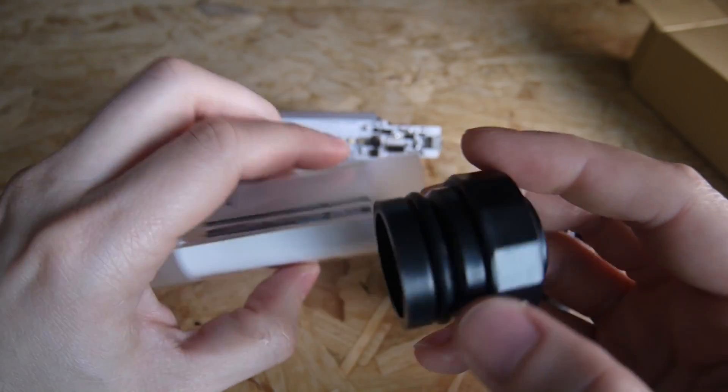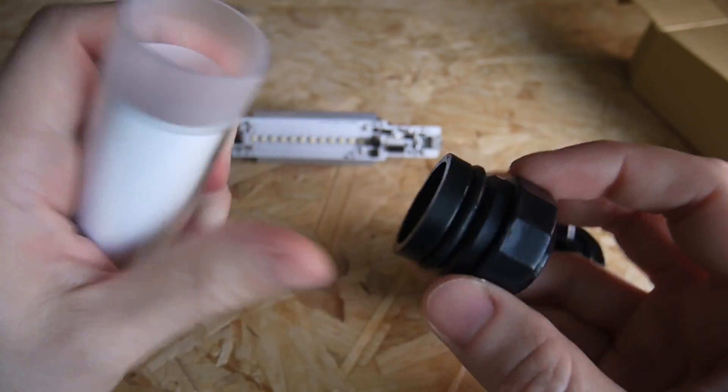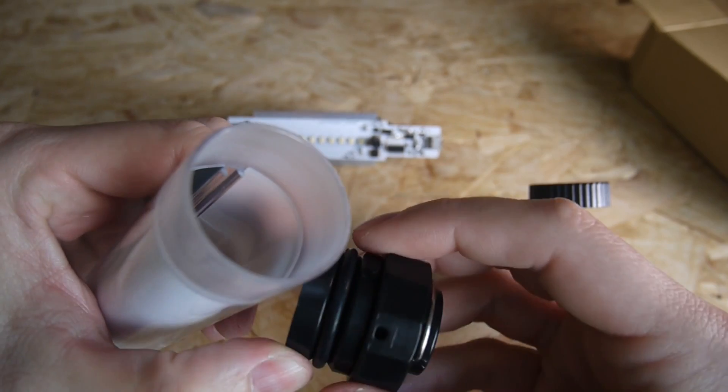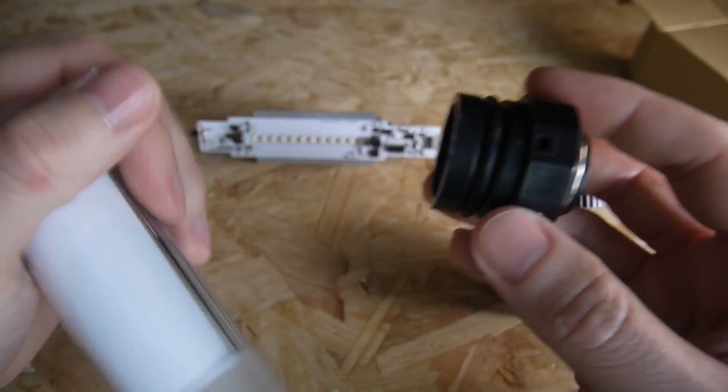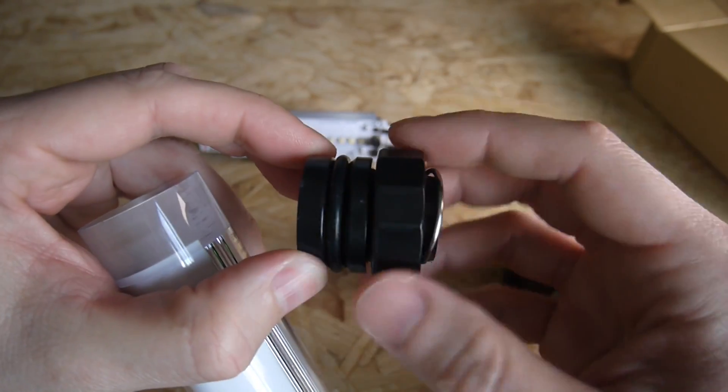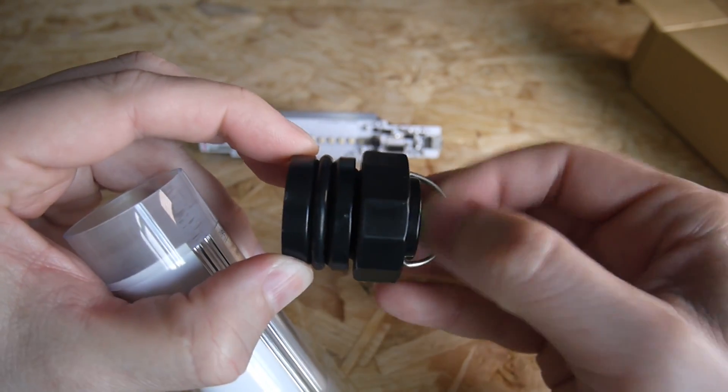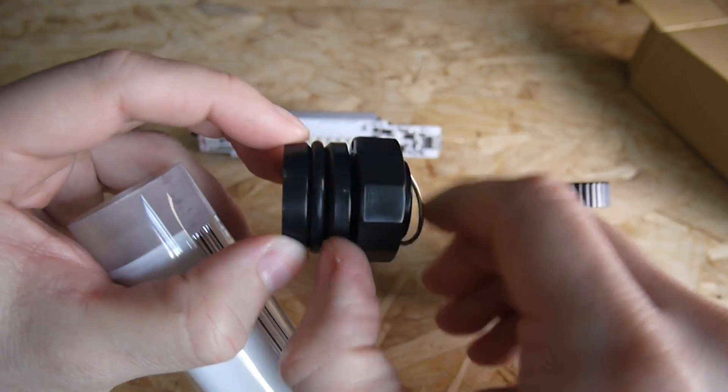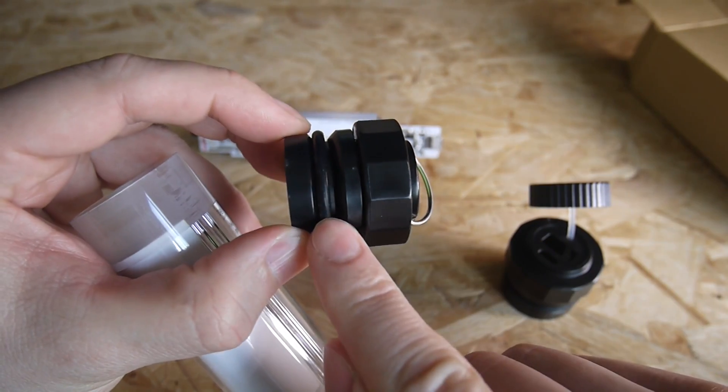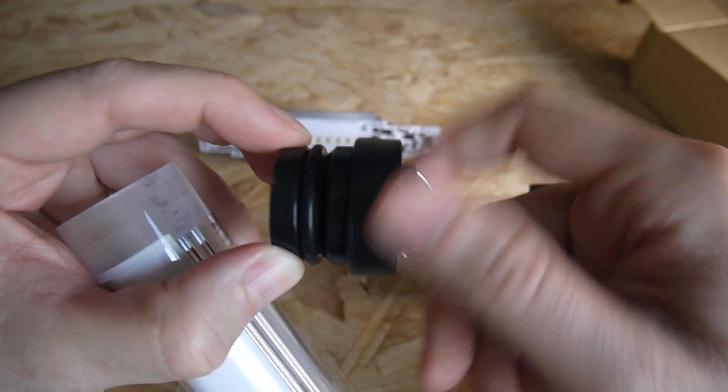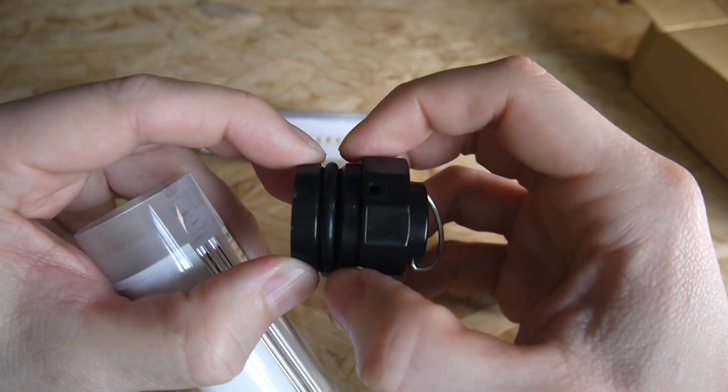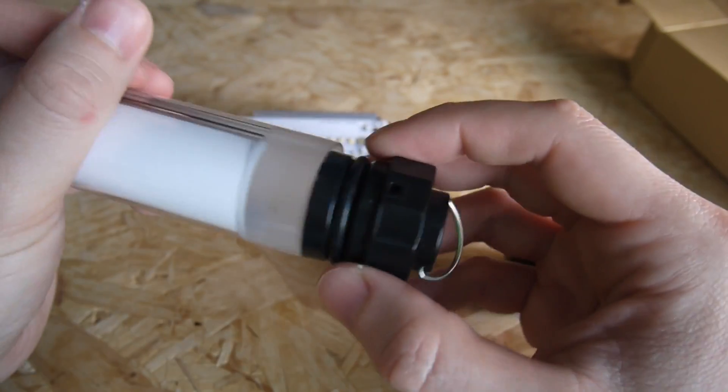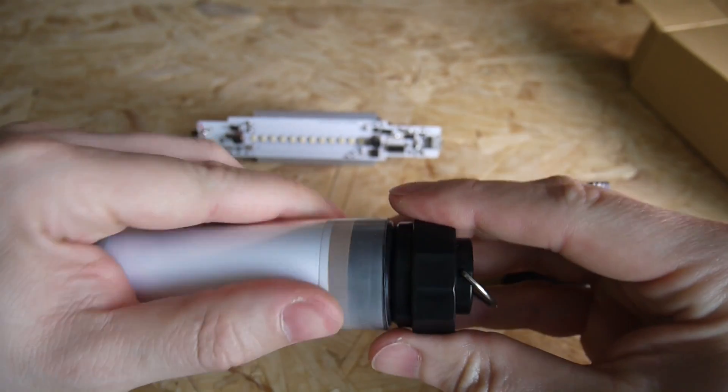Anyway, the way it's designed to be waterproof was actually quite interesting, I thought. So you've got this threaded section here. And then you've got this ramped section. And then there's an O-ring. And then when you tighten this down, that compresses the O-ring and makes it watertight. So I'll just show you that quickly.